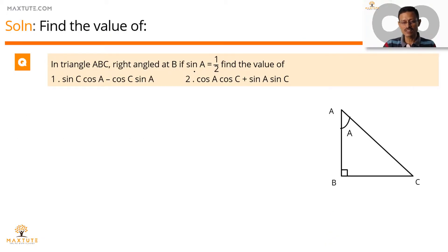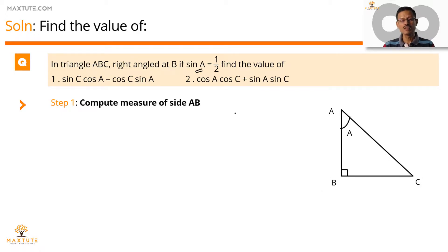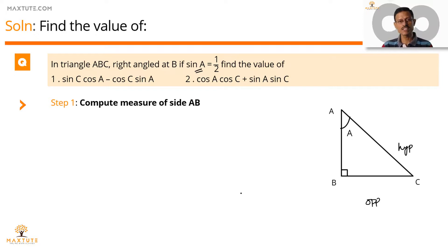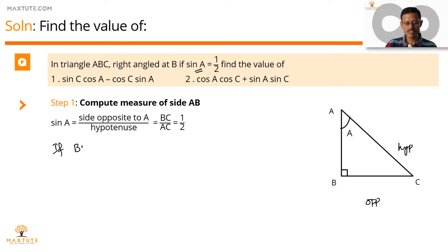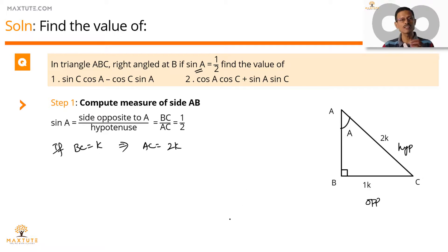Step 1 — we are going to use this information about sin A and mark the measure of two sides, then use that to compute the measure of side AB. Sin A is the ratio between the side opposite to angle A, which is BC, and the hypotenuse which is AC. So sin A equals BC by AC which equals 1 by 2. If we say BC equals K, then AC is going to be equal to 2K.